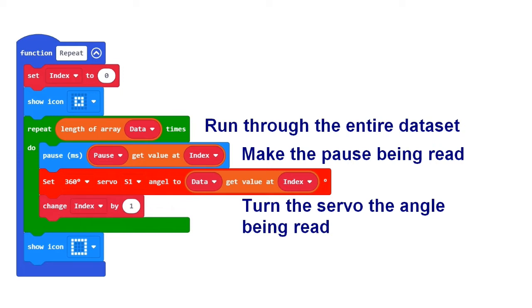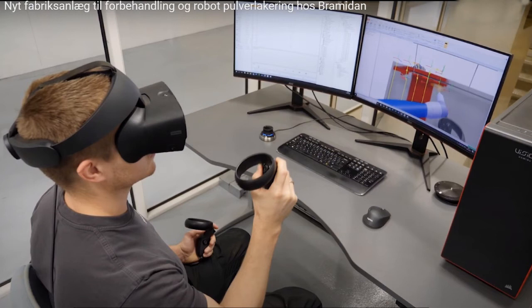The length of array block can find out how many records we have stored. When a robot has to perform complex movements, it also happens from data sets.